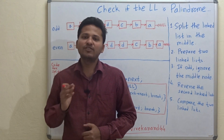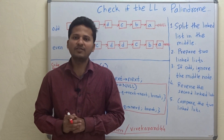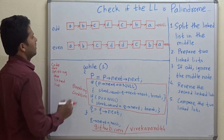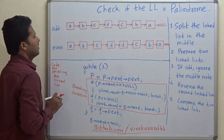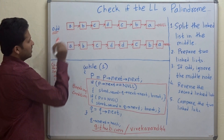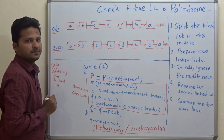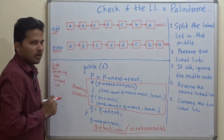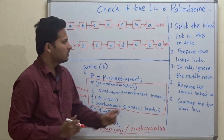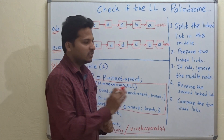Hello friends, today we are going to see how to check if a linked list is a palindrome or not. There are two examples: the first one is an odd length linked list and the second one is an even length linked list. For writing the program to check whether the linked list is a palindrome or not, these are the five steps to be followed.